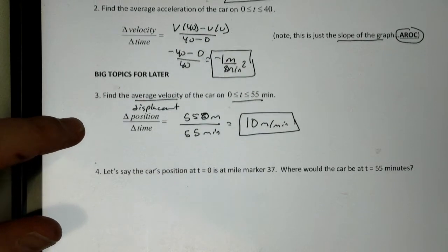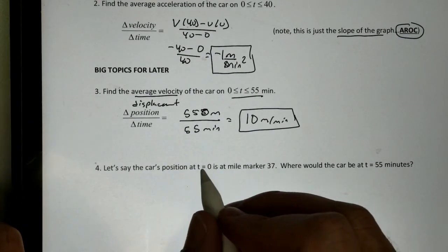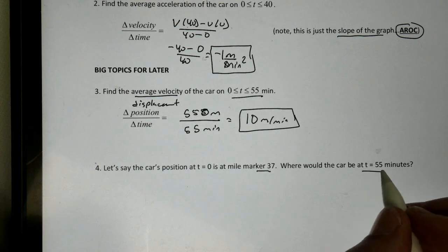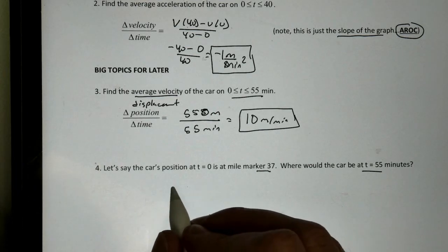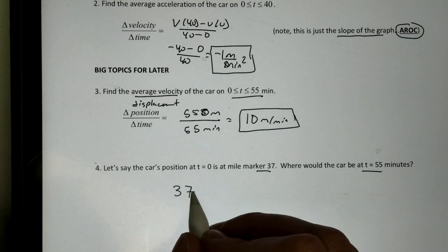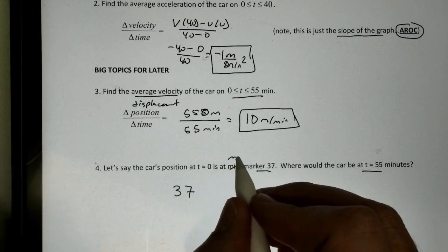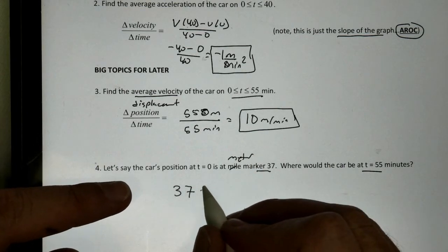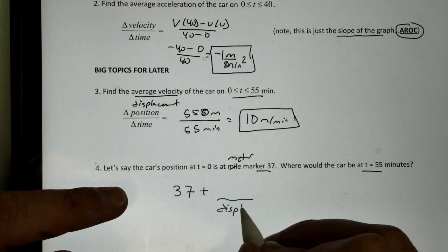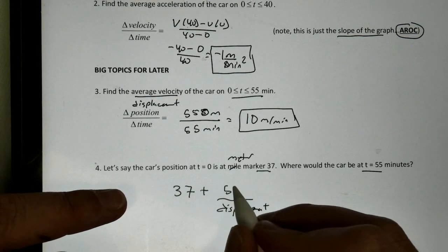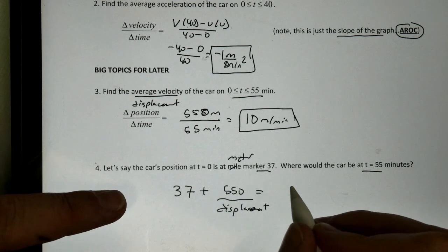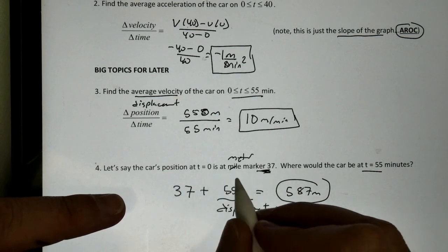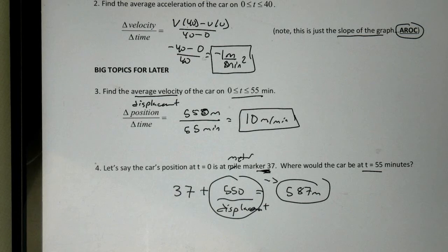Now, another thing we can do later on. Let's say this car starts at time t equals 0 at meter marker 37. Now, the question says, where will we be in 55 minutes? Well, if I'm starting at meter marker 37, I am going to add my displacement, which was 550 again. And that's going to give us 587 meters.